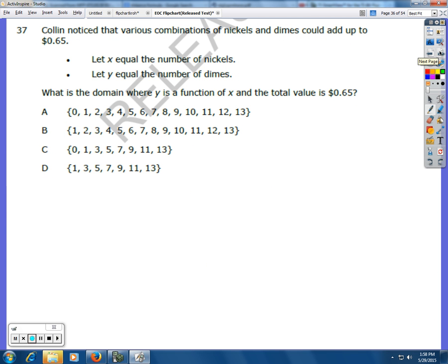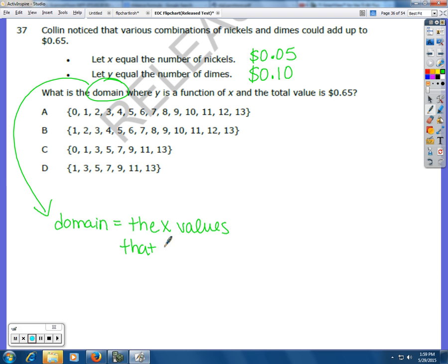Number 37. Colin noted that various combinations of nickels and dimes could add up to 65 cents. Let X equal the number of nickels, and each nickel is worth 5 cents. Let Y equal the number of dimes, and each dime is worth 10 cents. What is the domain? The domain, by the way, that's a tricky word. The domain just means the X values that can be used in the problem.